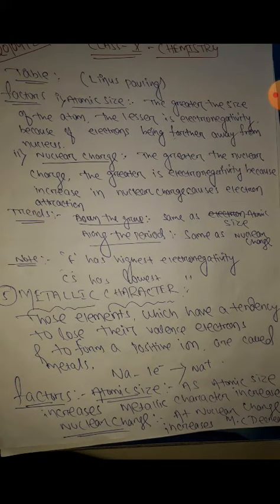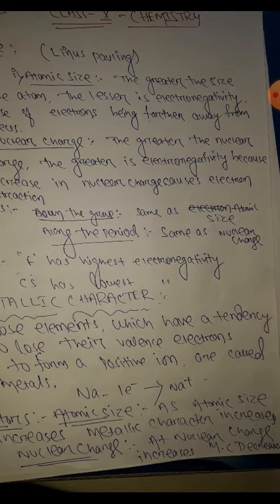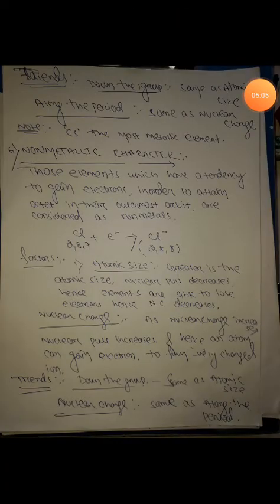Metallic character refers to elements that have a tendency to lose electrons — they form metallic or positive ions. For example, sodium loses one electron to become Na⁺. Factor one is atomic size: as atomic size increases, metallic character also increases. Moving from top to bottom, the number of shells increases, so electrons are lost very easily and metallic character increases. Moving left to right, nuclear charge increases, nuclear pull increases, atomic size decreases, and the electrostatic force of attraction becomes stronger, so metallic character decreases.